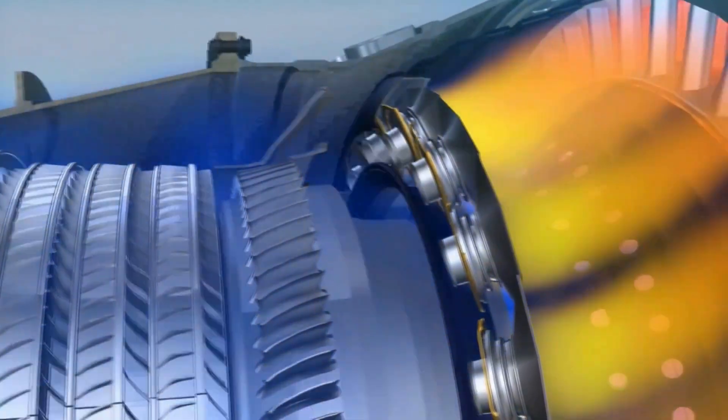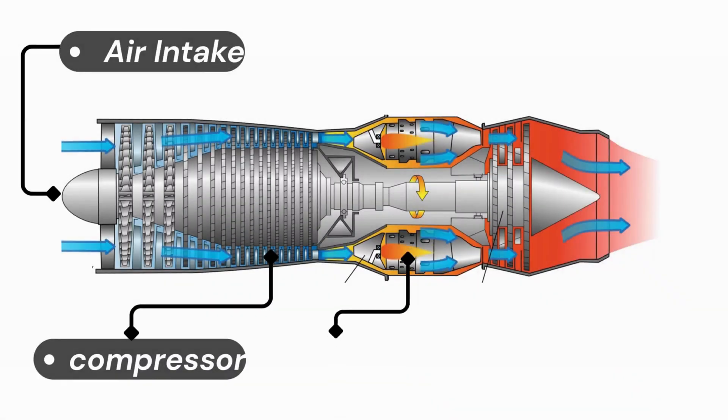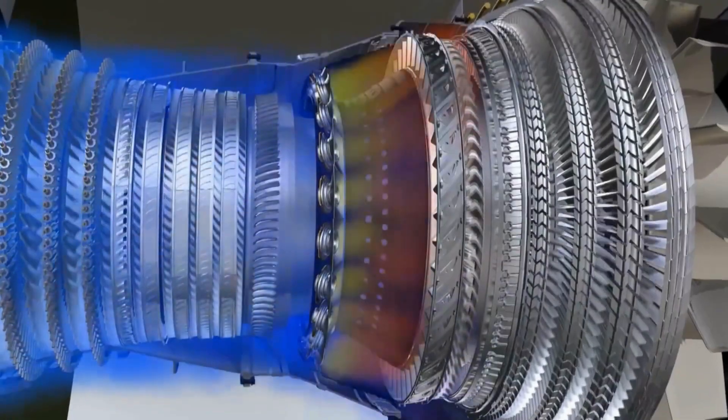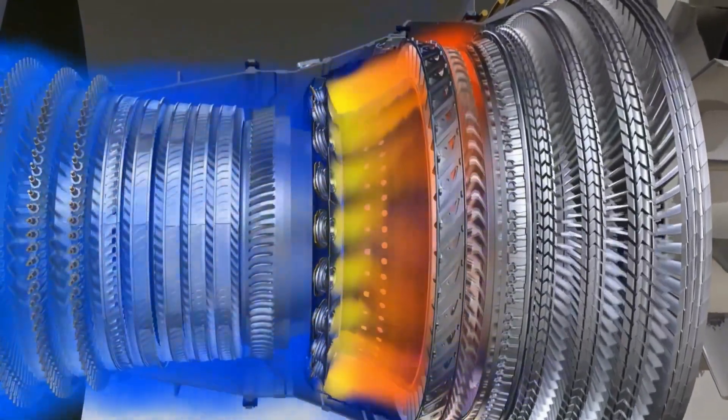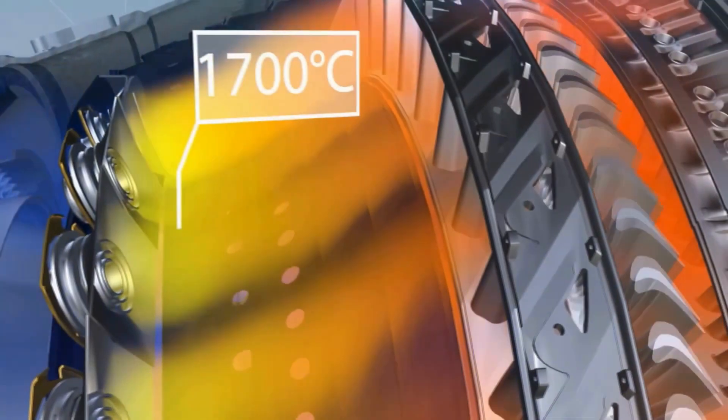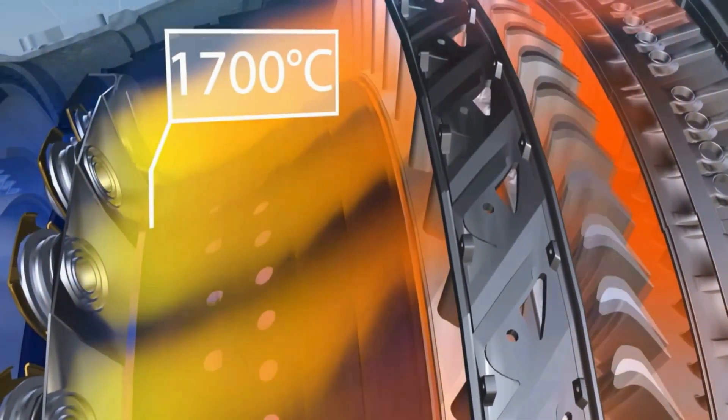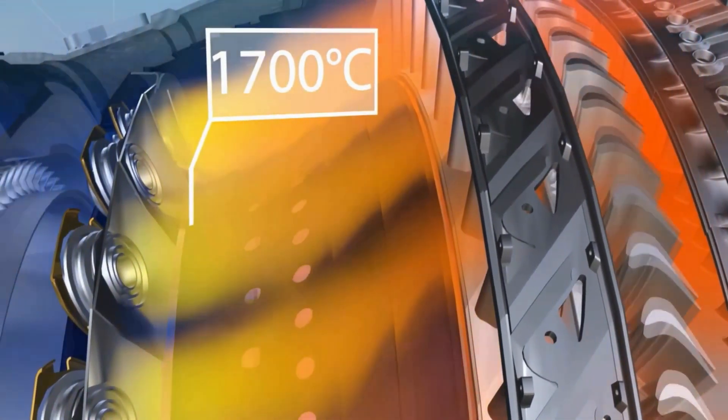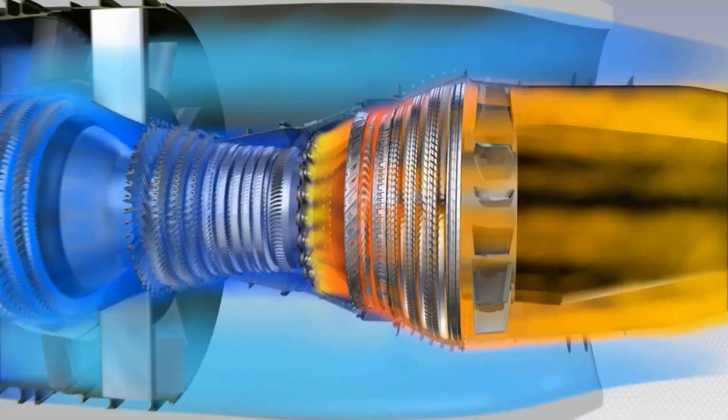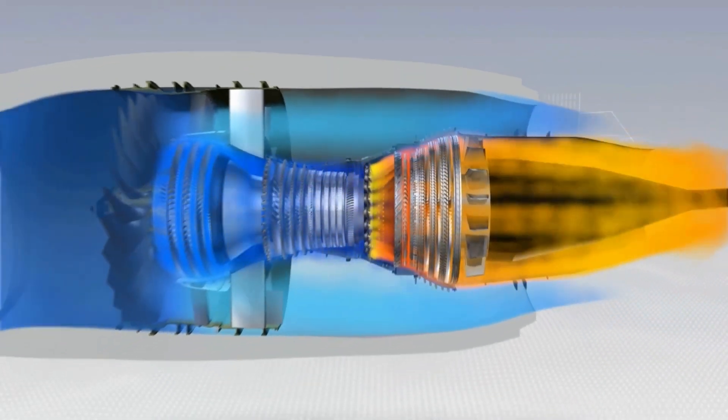Now we enter the heart of the engine: the combustion chamber. This is where fuel is injected and ignited. The compressed air mixes with the fuel and the mixture burns continuously, producing extremely hot, rapidly expanding gases.